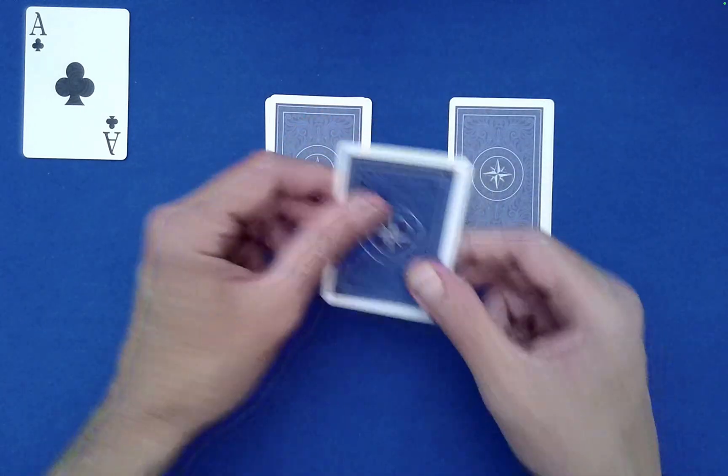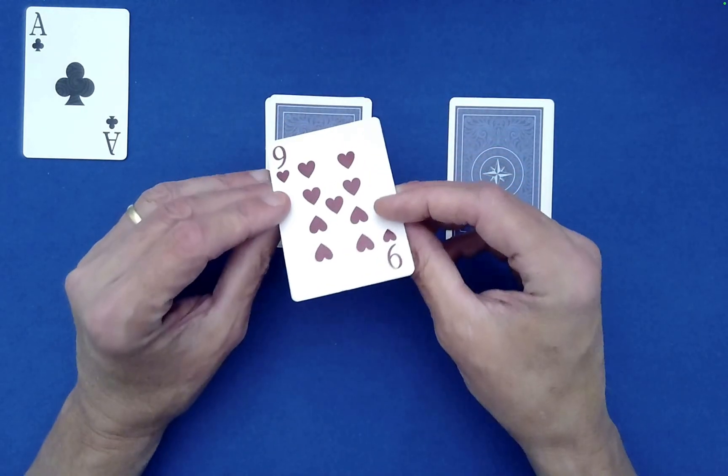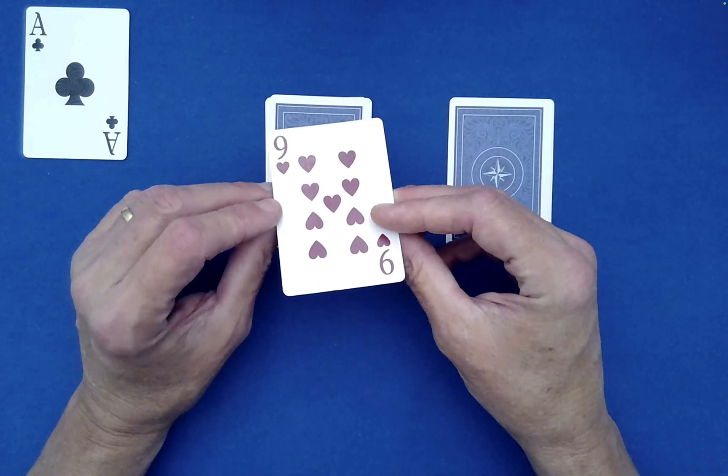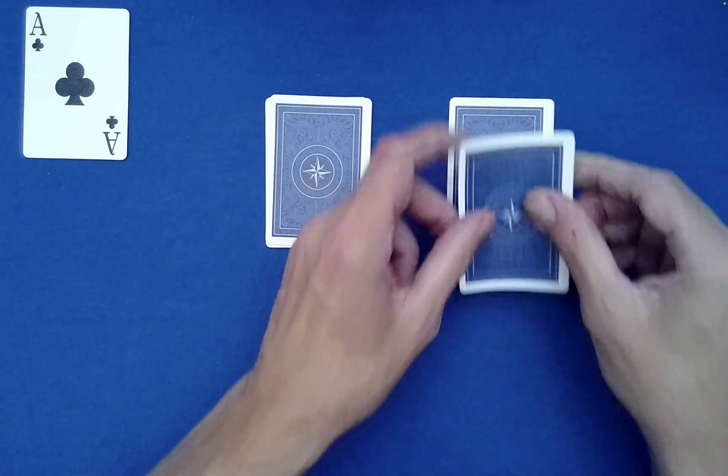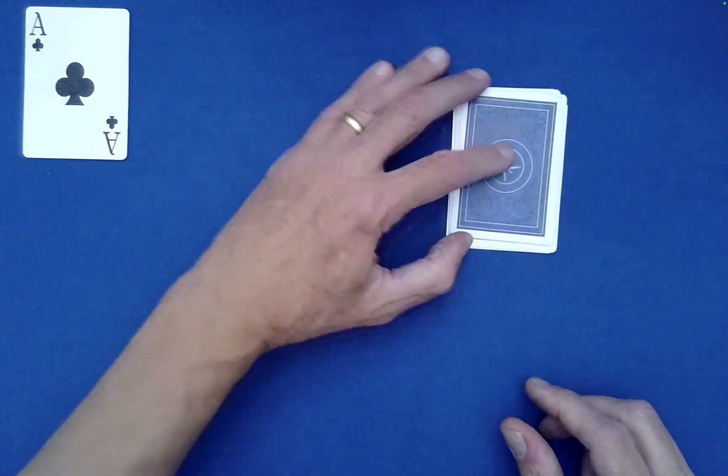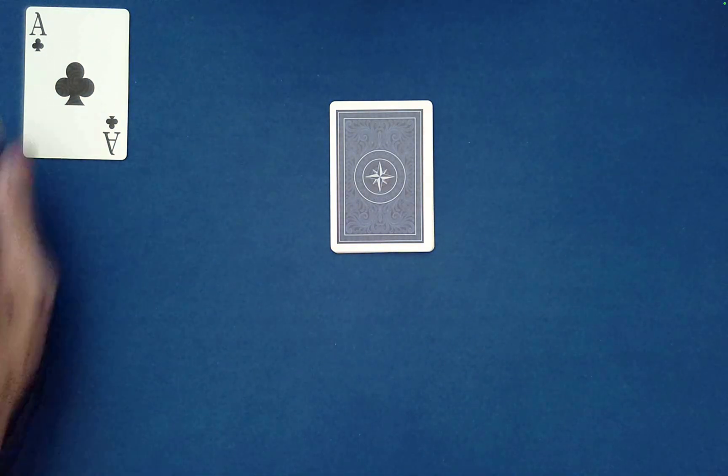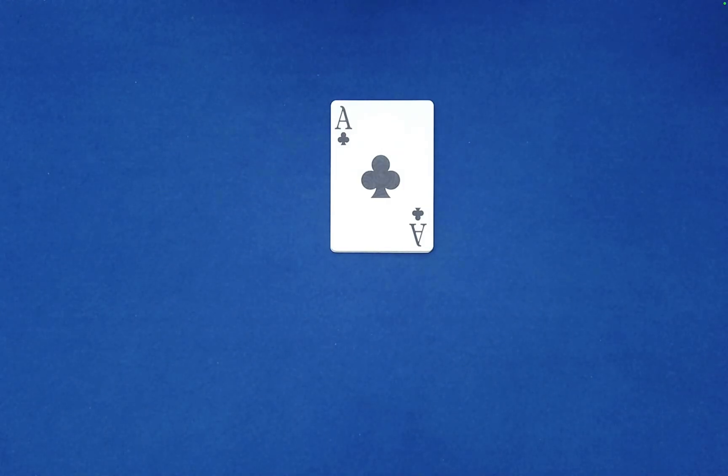So what I'm going to do is show you the identity of the top card. This is the card for you to remember. As the performer I wouldn't see this, of course. So you need to remember the nine of hearts. We'll just set it back on top and then bury it. Then we're going to take our ace of clubs and set it face up on top of the packet.